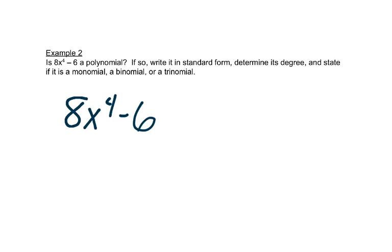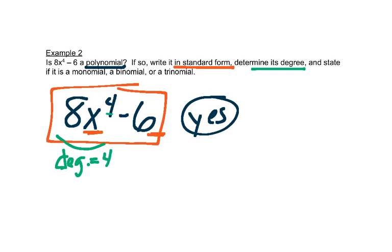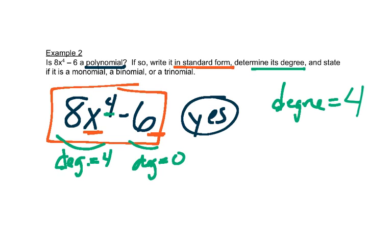Here we have 8x to the 4th minus 6. It asks: is this a polynomial? And the answer is yes. We have things that are added or subtracted together, and we don't have any variables in the denominators of fractions or inside square roots, so it's a polynomial. The next thing asks us to write it in standard form. It already is in standard form because the exponents go from biggest to smallest — x to the 4th first, then no letter at all. The degree of the first term is 4, the degree of the second term is 0, so the degree of the polynomial is 4.